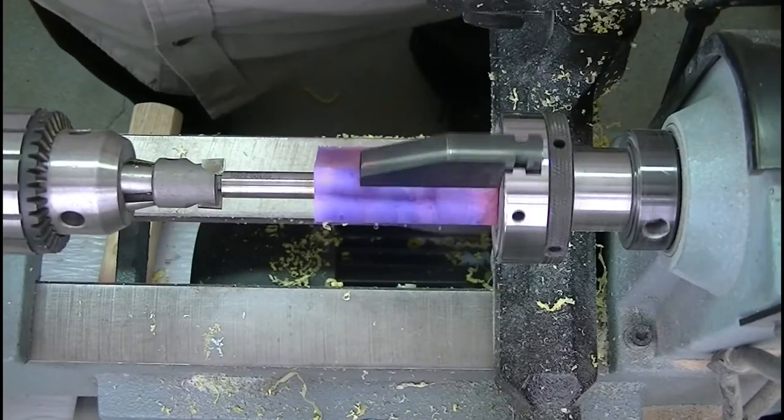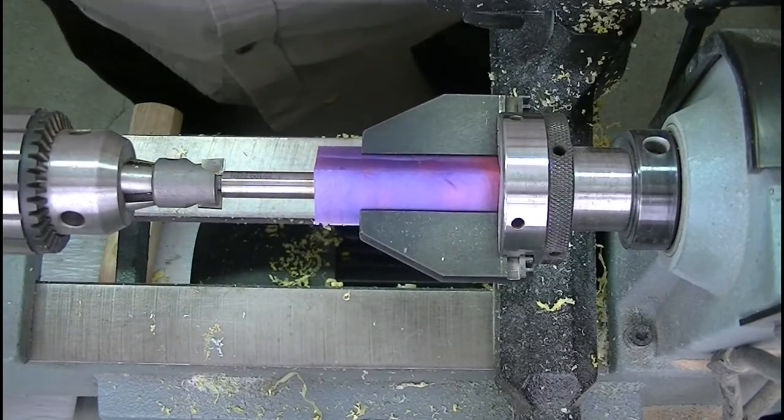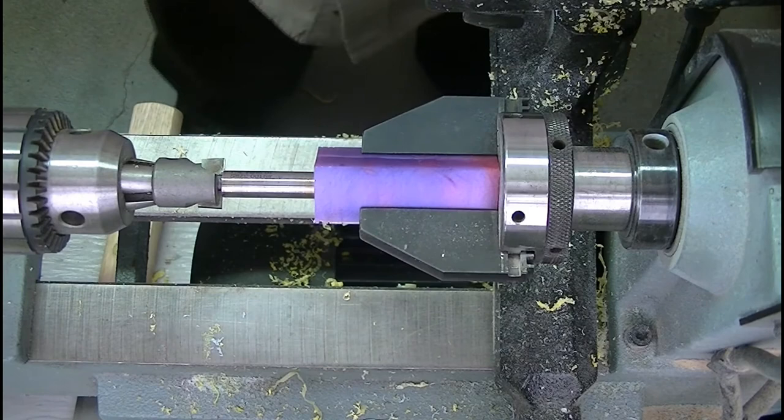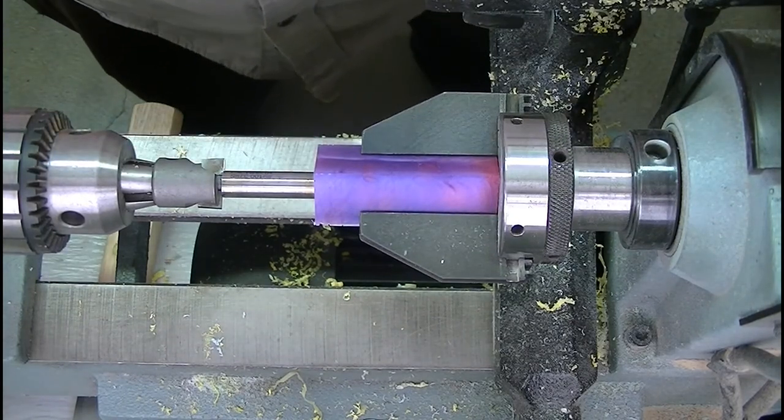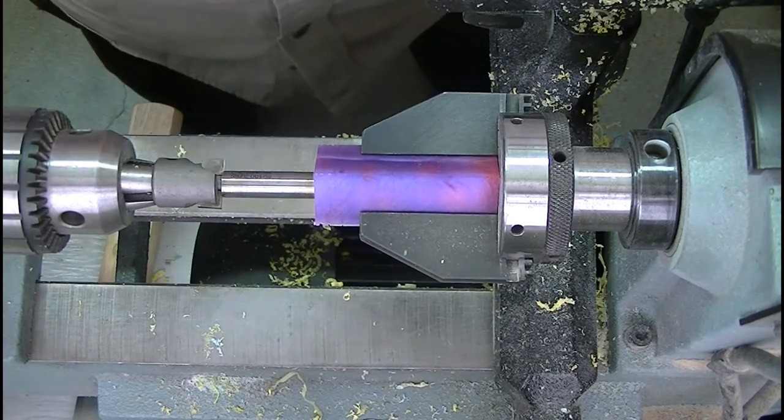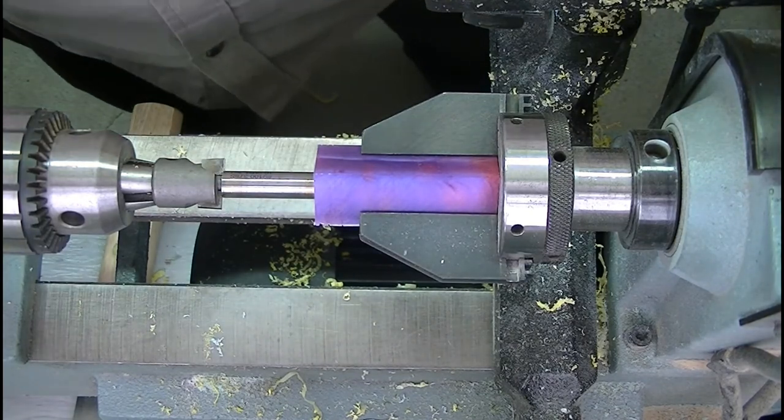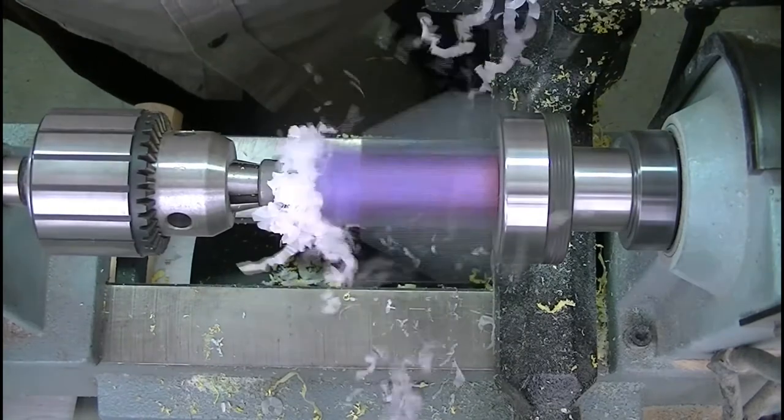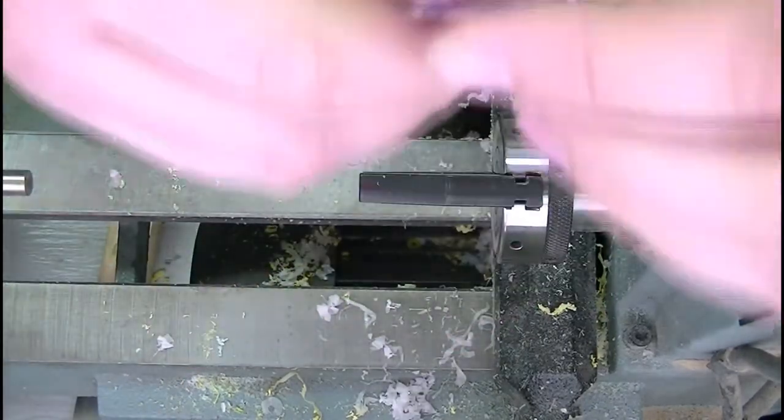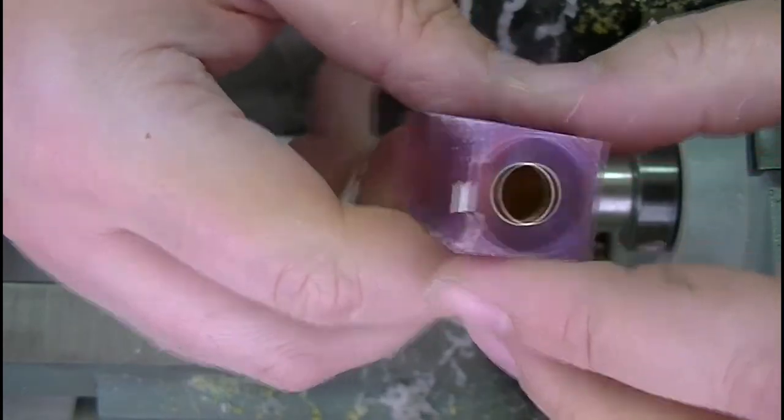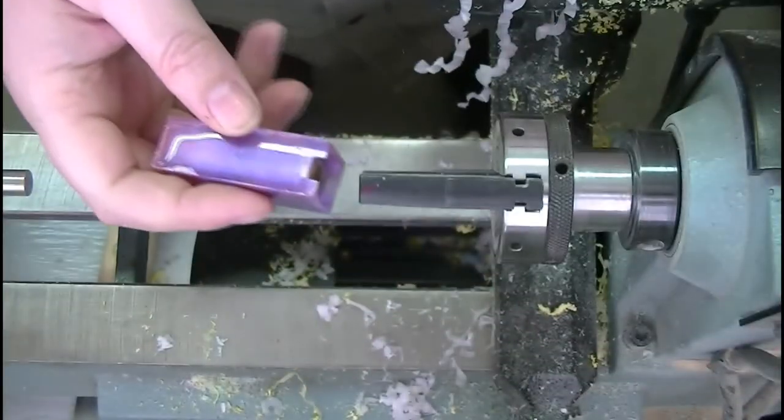Okay we got our pink and purple blank chucked back up here we're going to go ahead and barrel trim this and get it sitting flush and 90 to the brass tube and then we'll flip it around to the back side then we'll be ready to turn it. All right there we are good clean face there let's do our backside here. Good clean face there we're all set to turn this up.